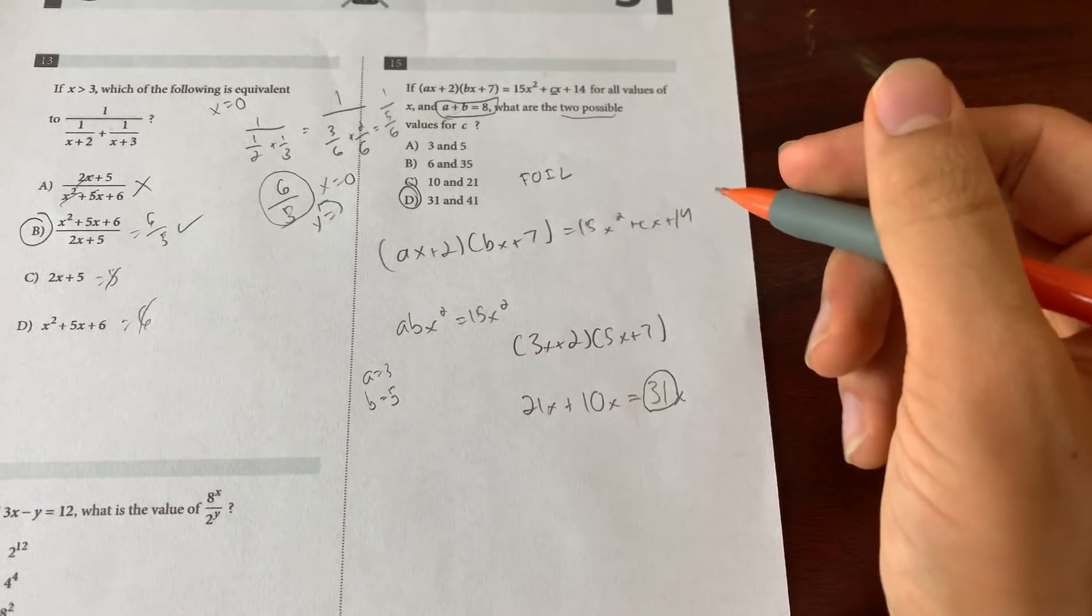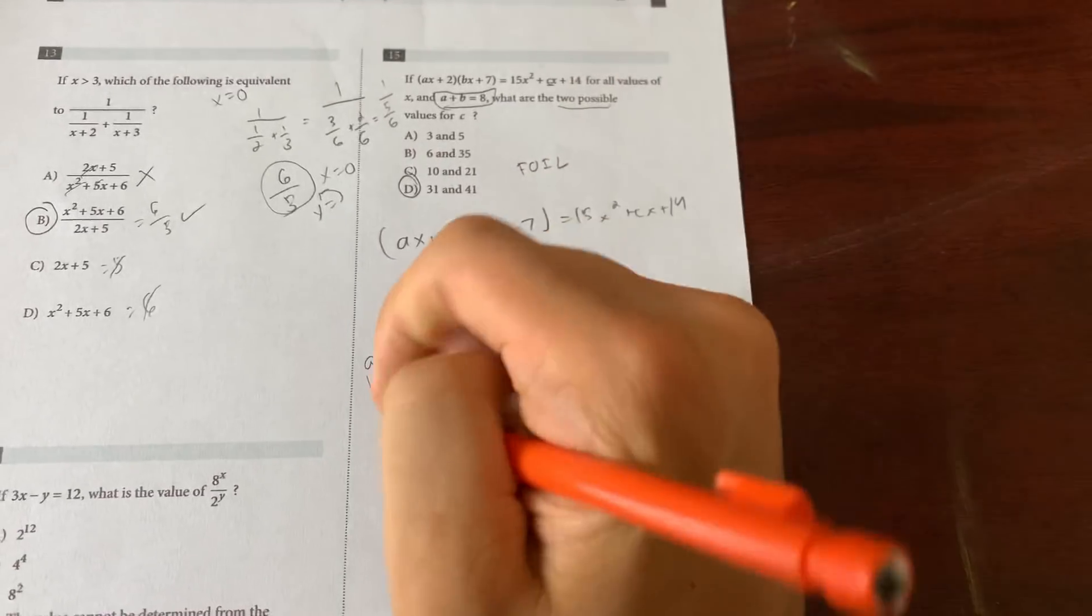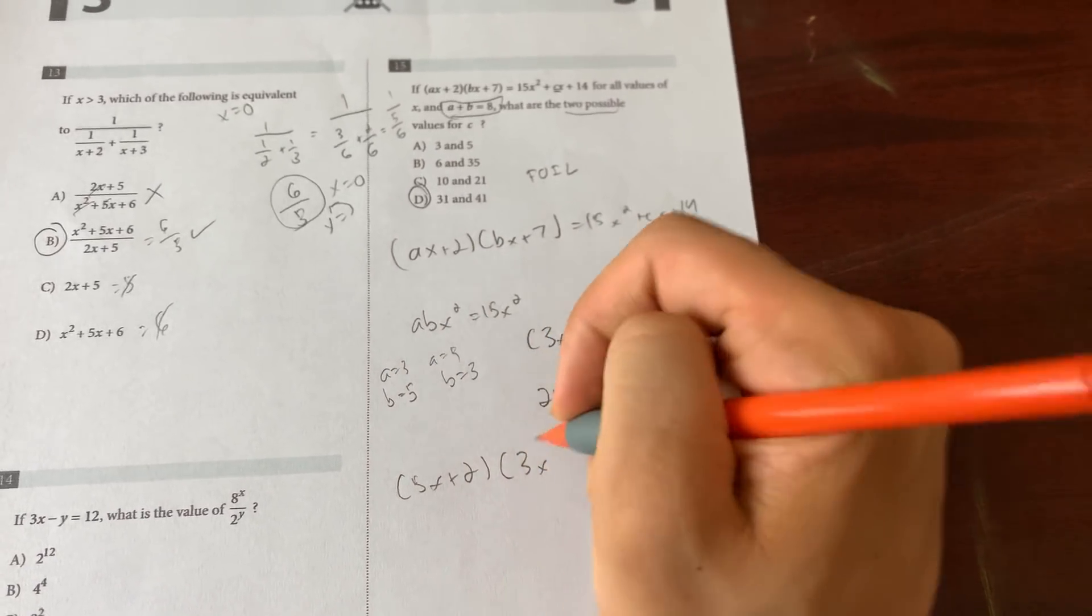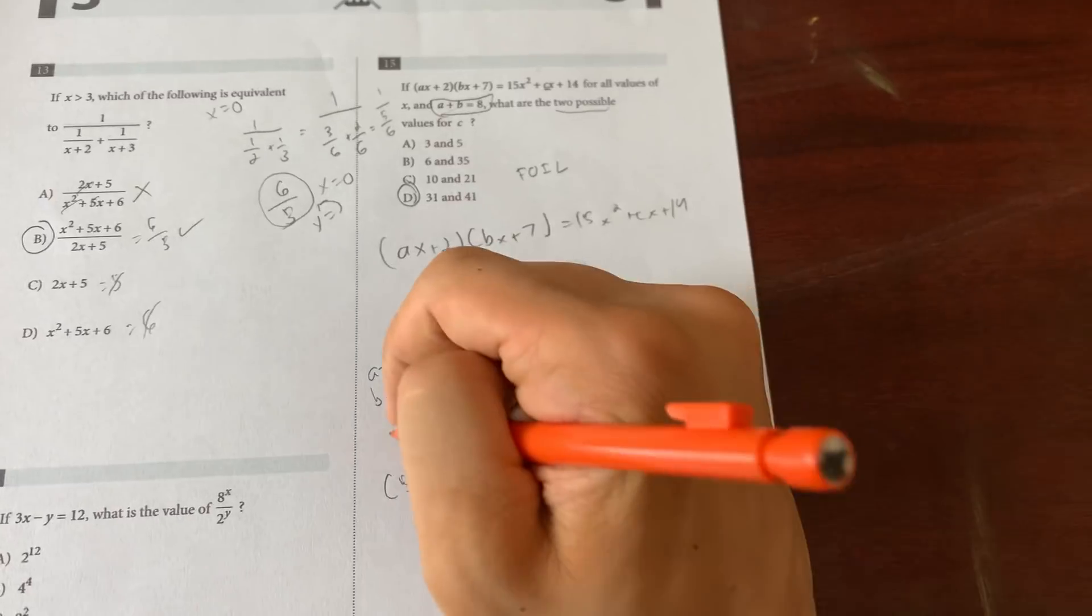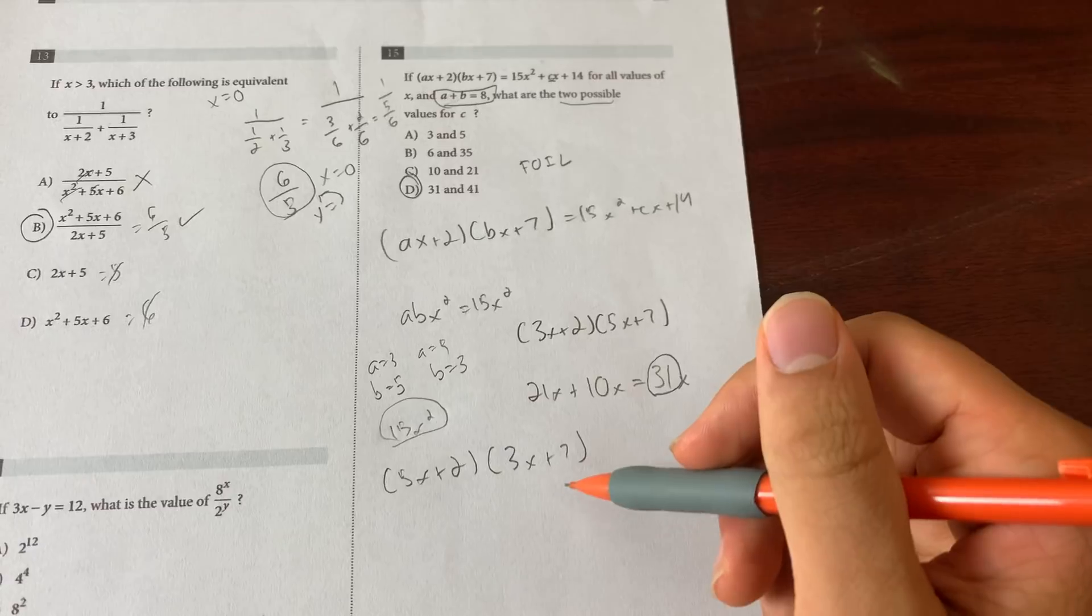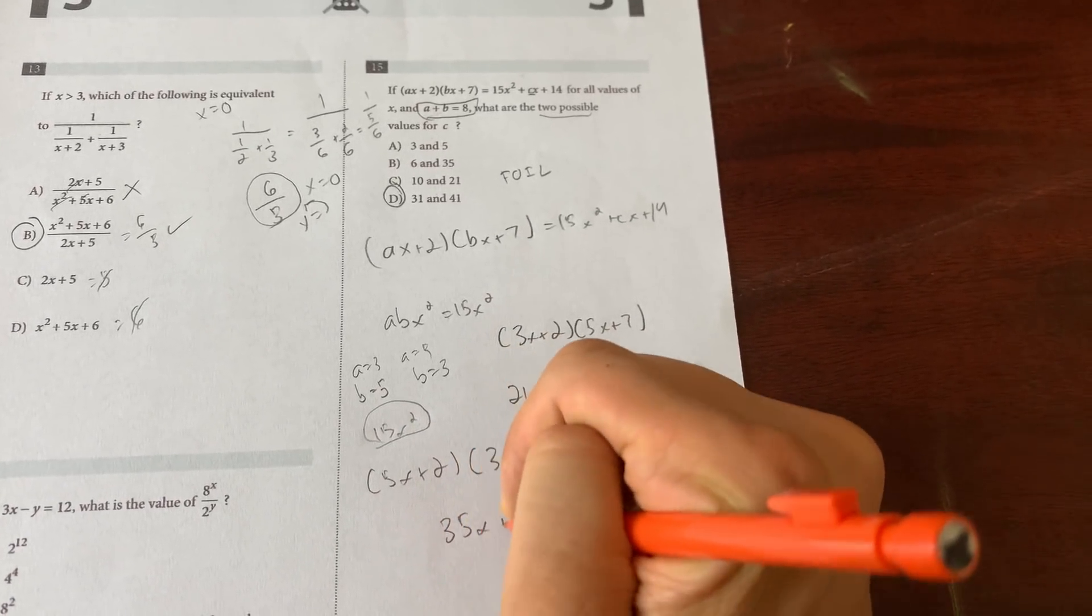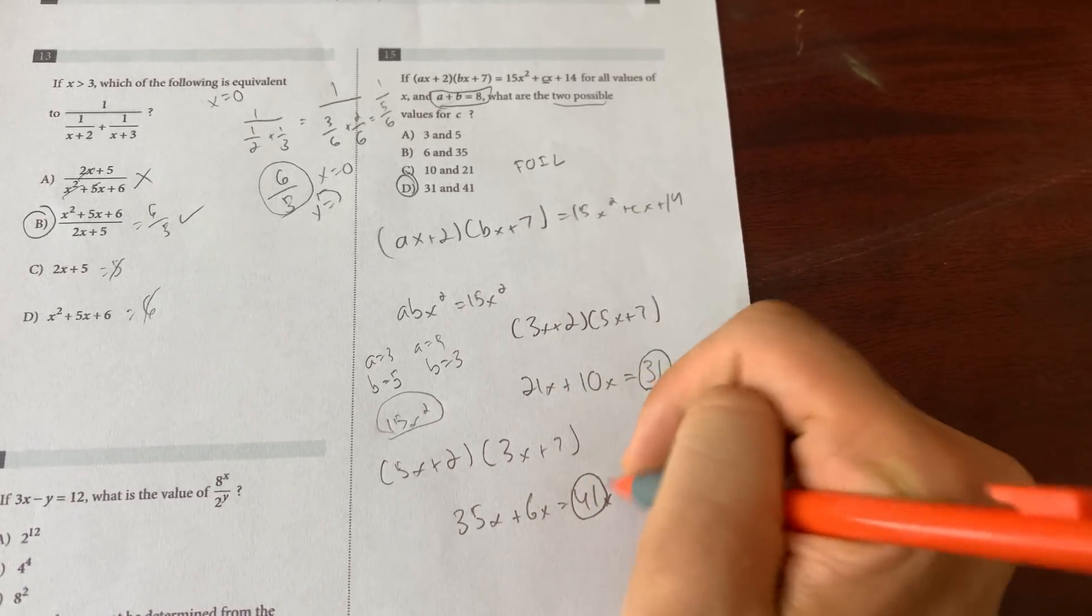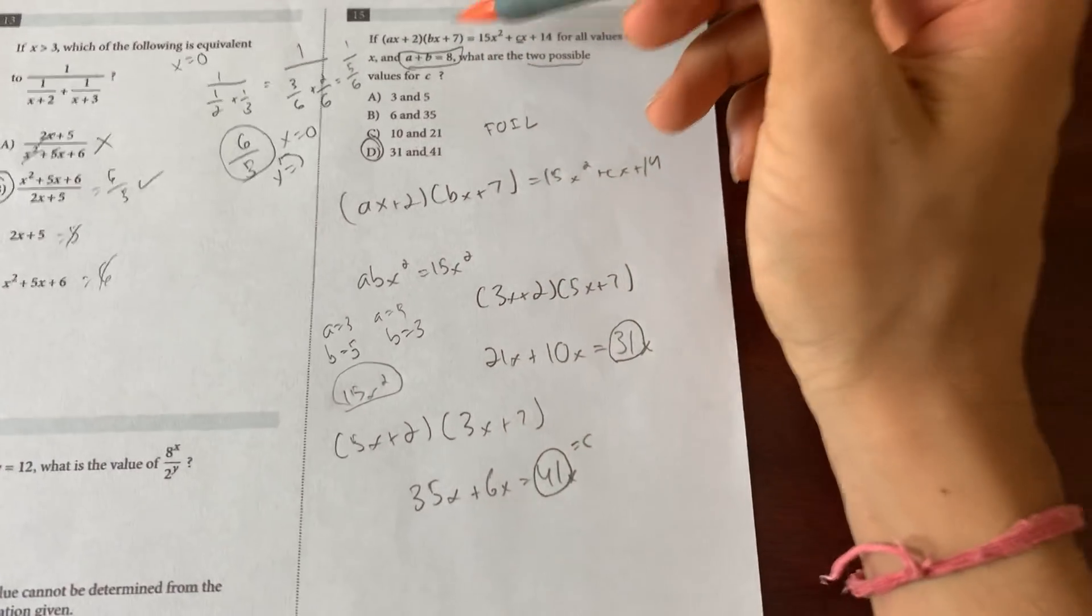Of course if you want to double check it then you can always just flip it. So now a equals 5 and b equals 3. In that case you would do (5x+2)(3x+7). The middle term, the first term again 15x² because that's like the criteria, right? The middle term was 5 times 7, you get 35x, plus the inner term which is 6x, which gives you 41x. So 41 equals c. So 31 and 41 are your two possible values.